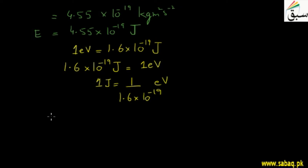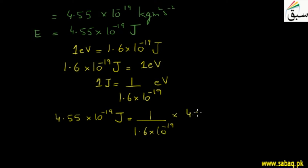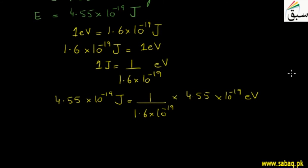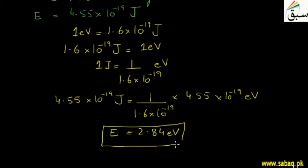We convert 4.55 into 10 raised to the power minus 19 Joule, which equals 1 divided by 1.6 into 10 raised to the power minus 19, multiplied by 4.55 into 10 raised to the power minus 19. After calculating, this equals 2.84 electron volts. So our final result is: the energy of the electron is 4.55 into 10 raised to the power minus 19 Joule, which is equal to 2.84 electron volts. I hope you understand this problem.